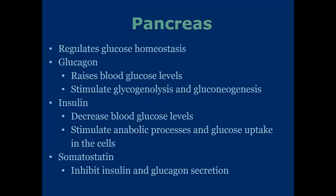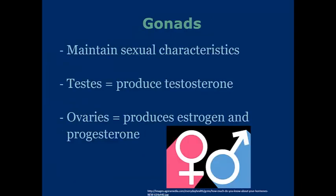Somatostatin inhibits both insulin and glucagon secretion. The gonads maintain sexual characteristics: in males, testosterone is released from the testes; in females, the ovaries produce estrogen and progesterone. This is crucial to maintain sexual function and sexual characteristics. Note that males have trace amounts of estrogen and progesterone, and females have trace amounts of testosterone.